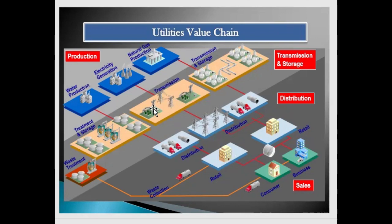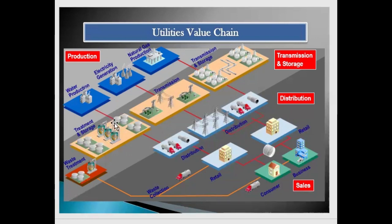A similar value chain applies for gas. For natural gas, production happens mostly in gas mines. From there they transmit to storage units, then transport to the distribution unit, and from there to retailers. In India, Bharat Petroleum handles much of this, and there are three major retailers: Indian Gas, Bharat Gas, and Hindustan Petroleum. Slowly private players like Reliance and HP have been introduced into the gas segment.